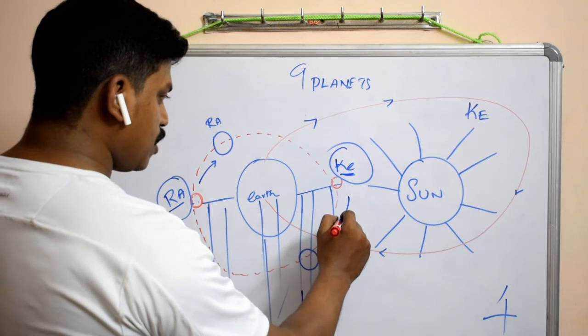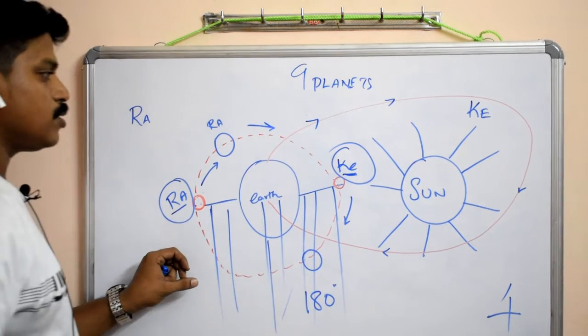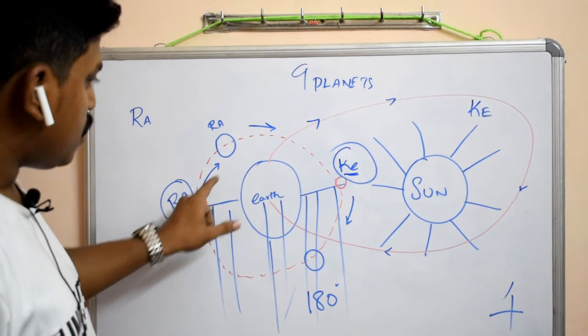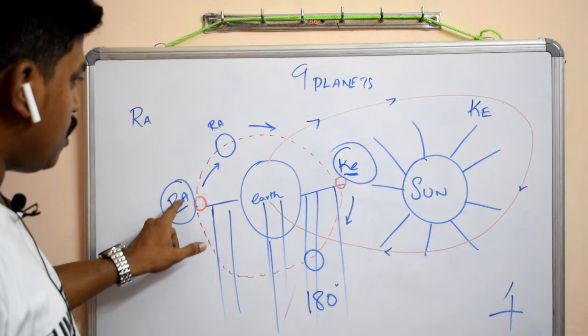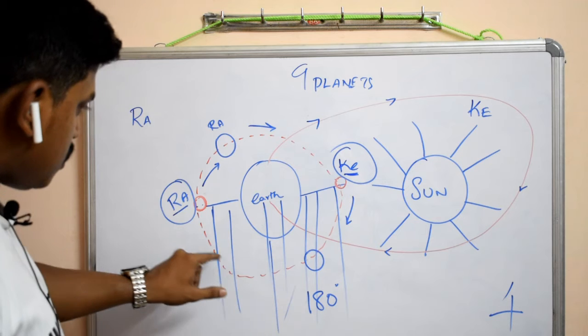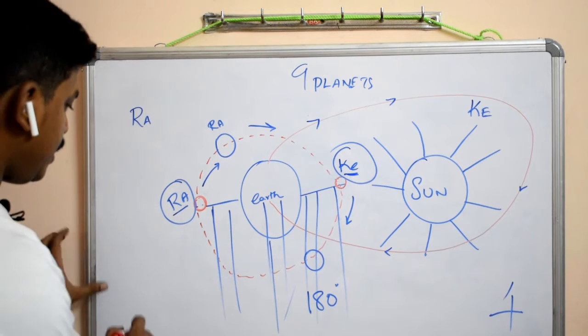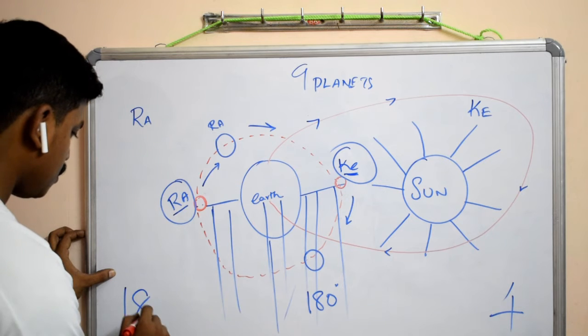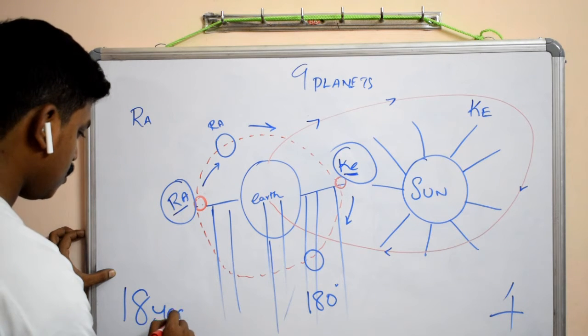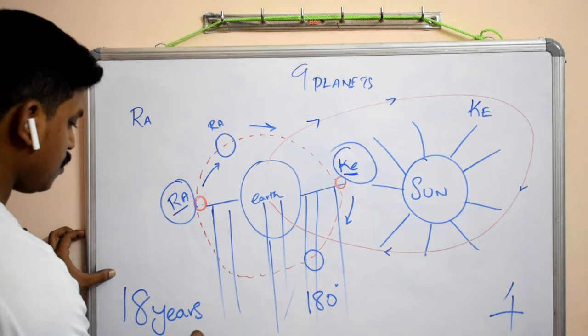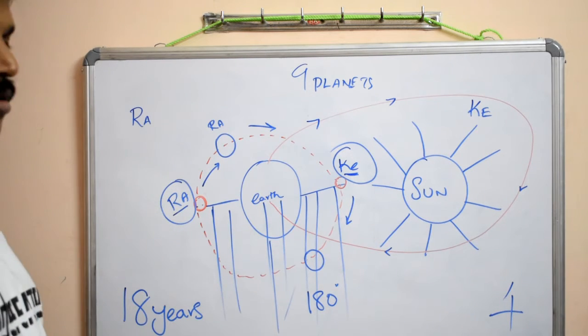In the same way, the rotation will be like this, this arbitrary motion. You take one full rotation. If the Rahu started from here, and if it comes next rotation, next position, if it comes here, it will take 18 years to complete the rotation around our Earth.